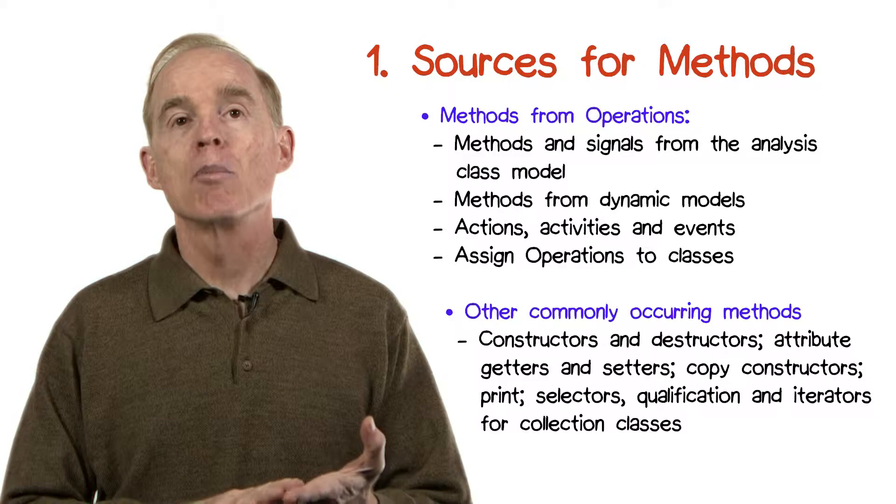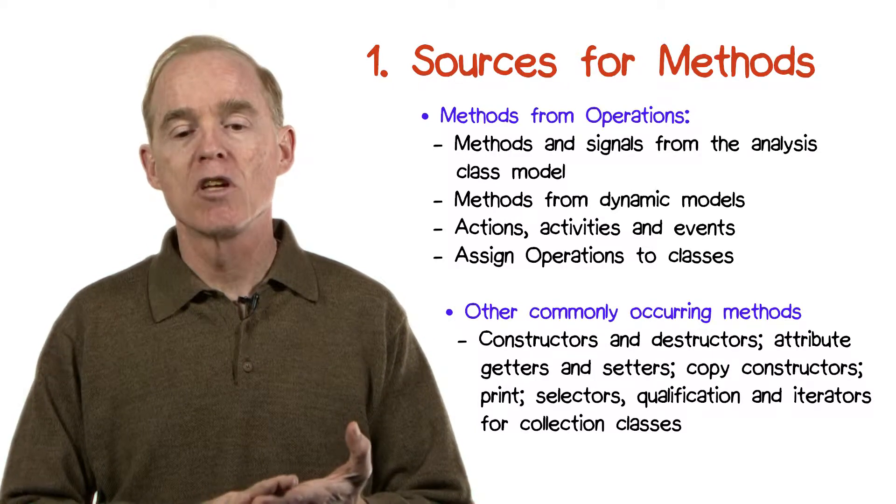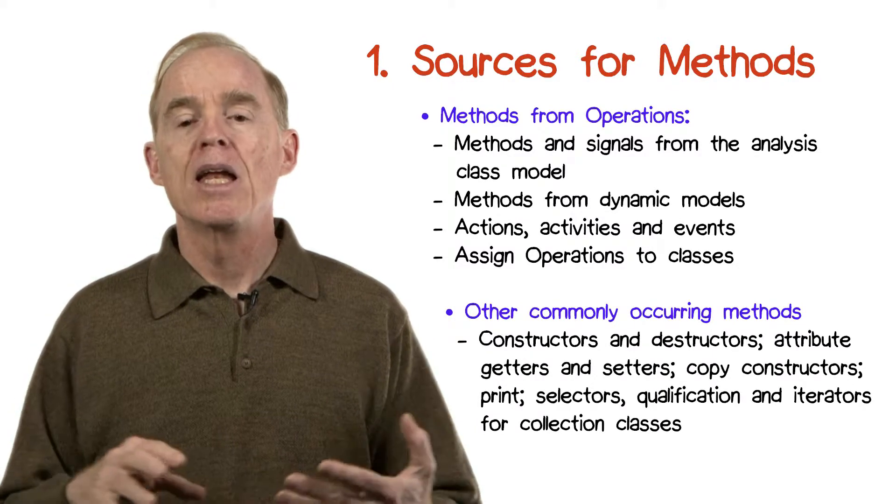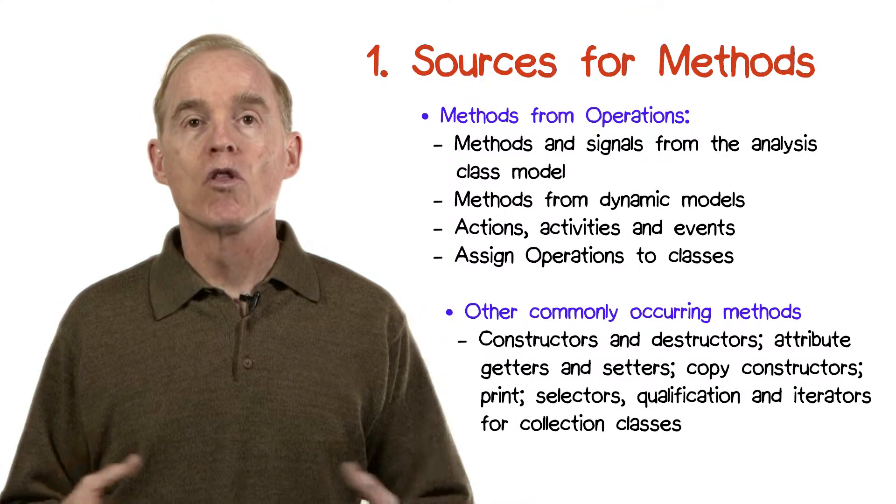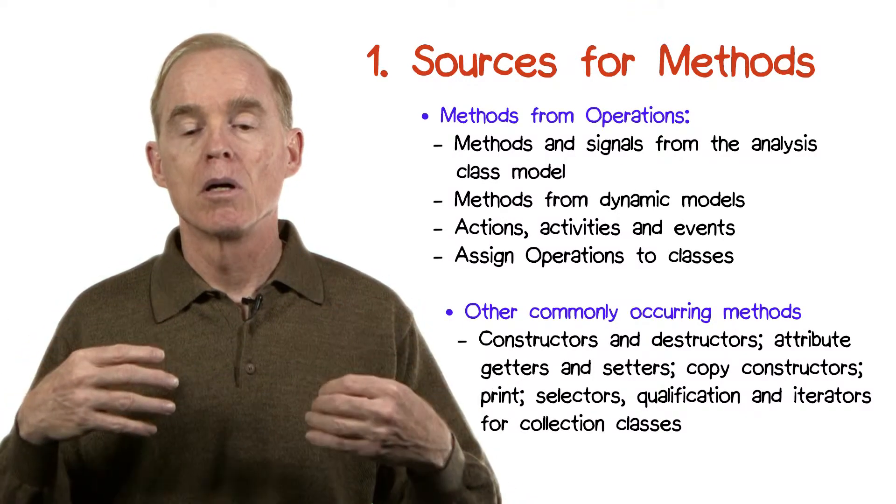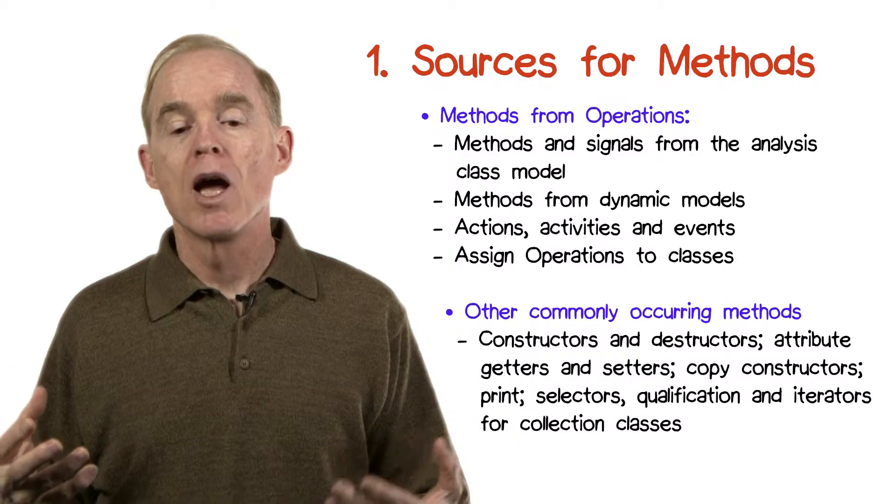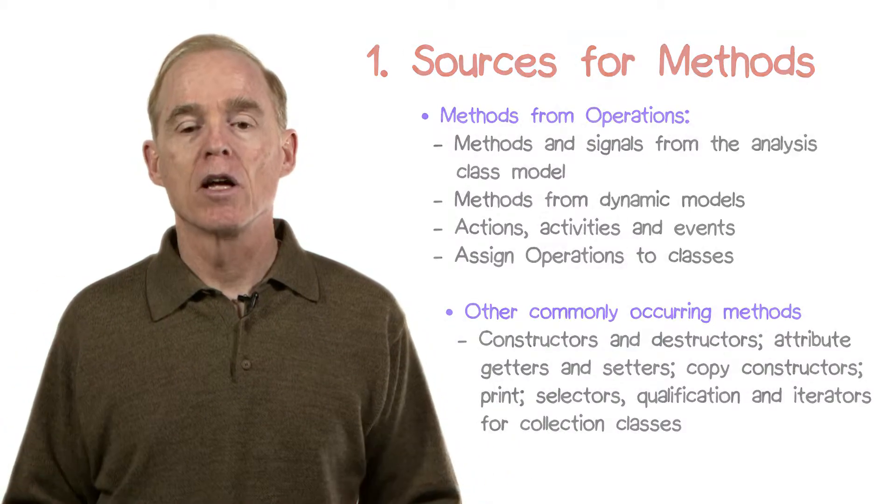Selectors, if you have complex data, how you're going to take out the pieces of it. And any kind of iterators if your class is a collection class of some sort, how are you going to provide the elements of that collection? It's not necessarily the case that every class has to have all of these methods, but you should be aware of the possibility of their existence so you can determine early on whether or not you need to define them.